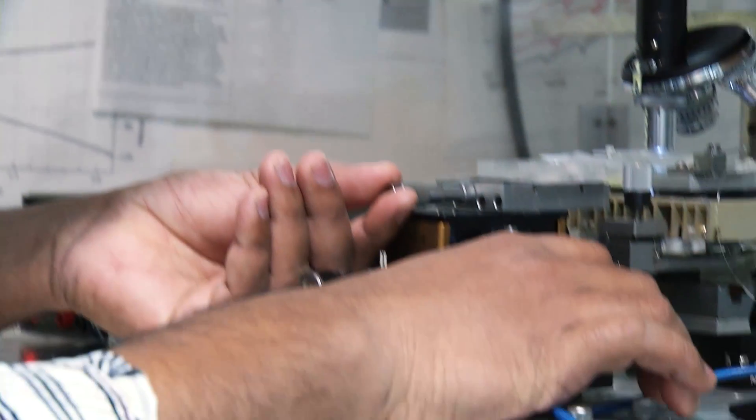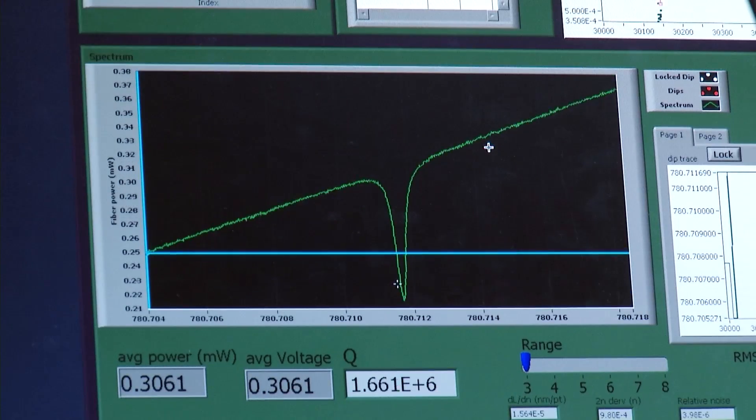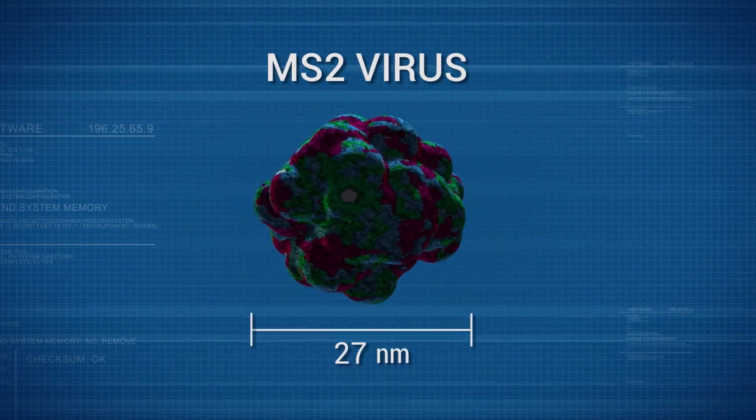For the first time, scientists have detected one of the smallest known viruses, known as MS2. This thing is basically a millionth of a millionth of a millionth of a gram. They can even measure its size, about 27 nanometers.